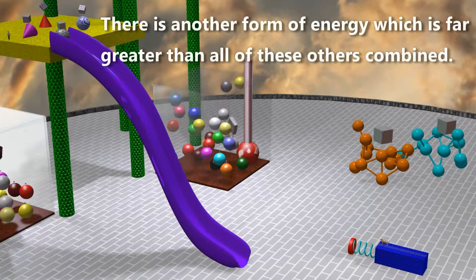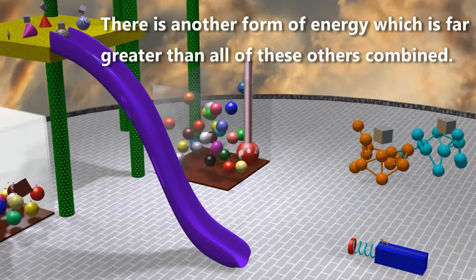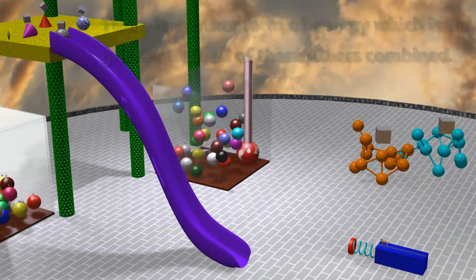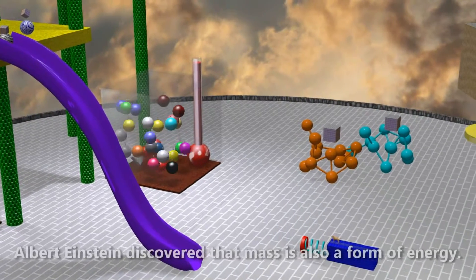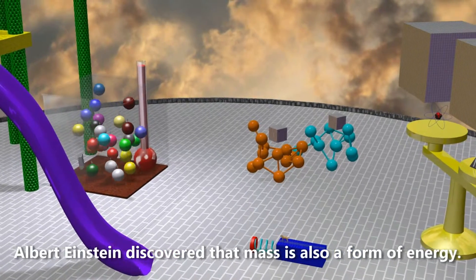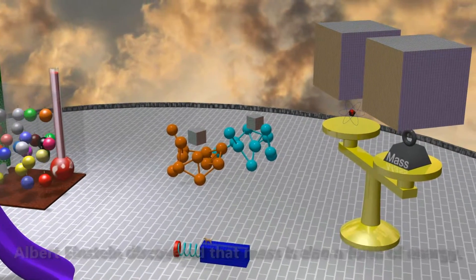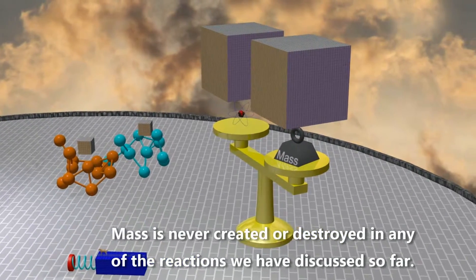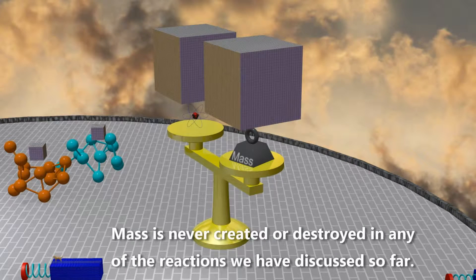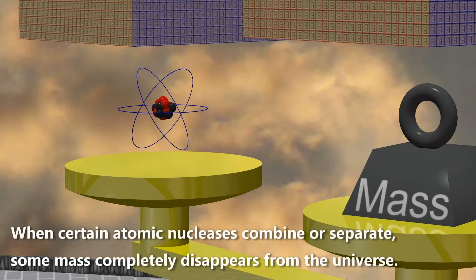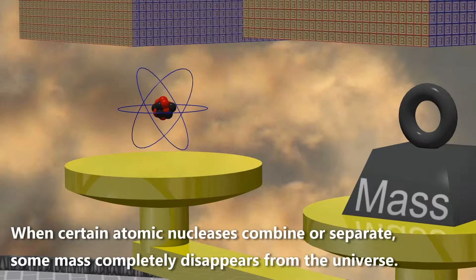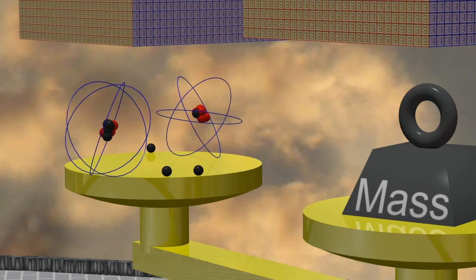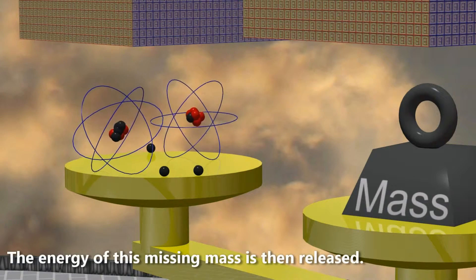There is another form of energy which is far greater than all of these others combined. Albert Einstein discovered that mass is also a form of energy. Mass is never created or destroyed in any of the reactions we have discussed so far. When certain atomic nucleuses combine or separate, some mass completely disappears from the universe. The energy of this missing mass is then released.